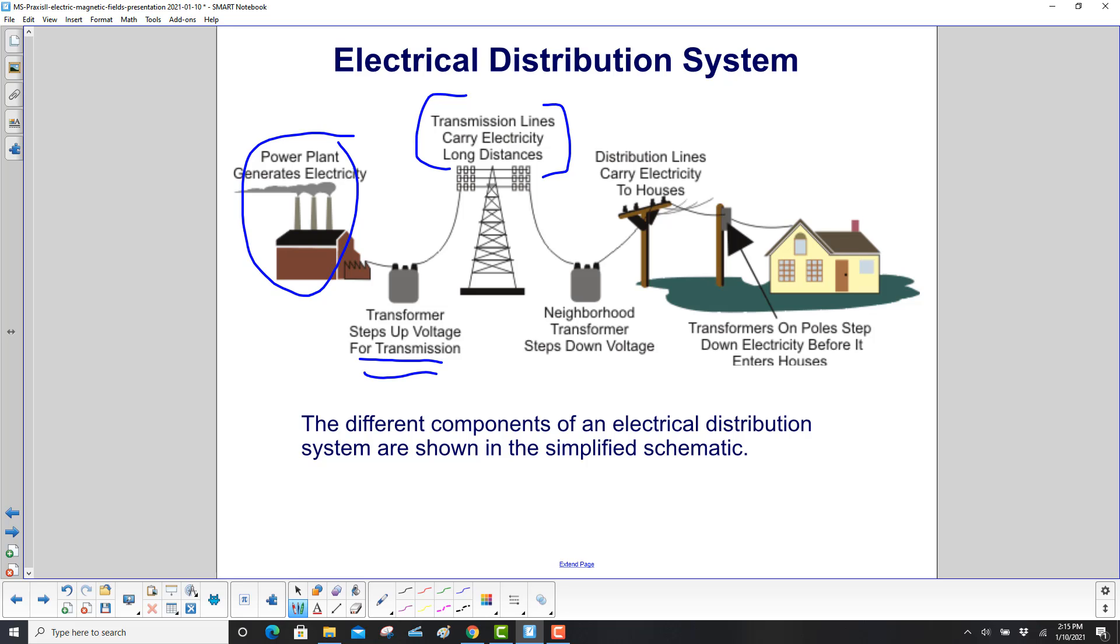Then it gets to your neighborhood. It steps the voltage down here, goes up on the poles in your neighborhood, goes to other poles, and then near a smaller group of houses you have one more transformer. That steps the electricity down, the voltage, one more time to the 120 volts that will be used in homes.